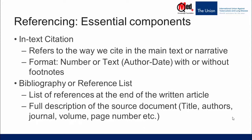As mentioned earlier, there are two essential components to a reference: in-text citation, and bibliography or reference list. In-text citation refers to the way we cite within the main text — it could be a number or text, quite often in author-date format, with or without footnotes. The bibliography or reference list is a list of all references inserted at the end of the written article, providing a full description of the source documents cited. This list can be arranged either in the order cited in the text or in alphabetical order.